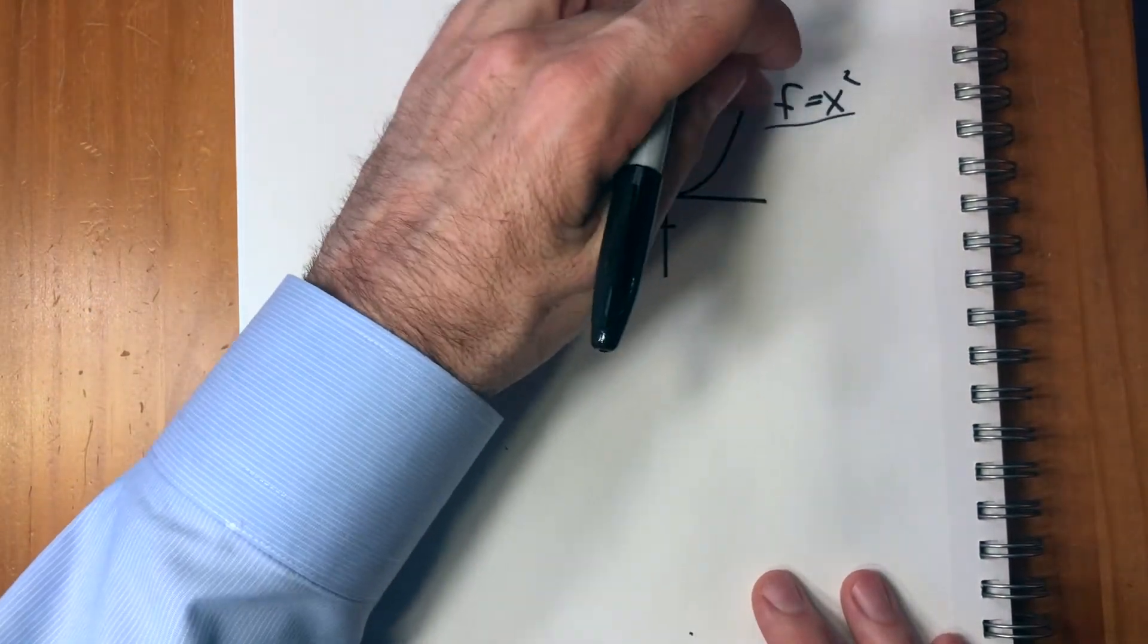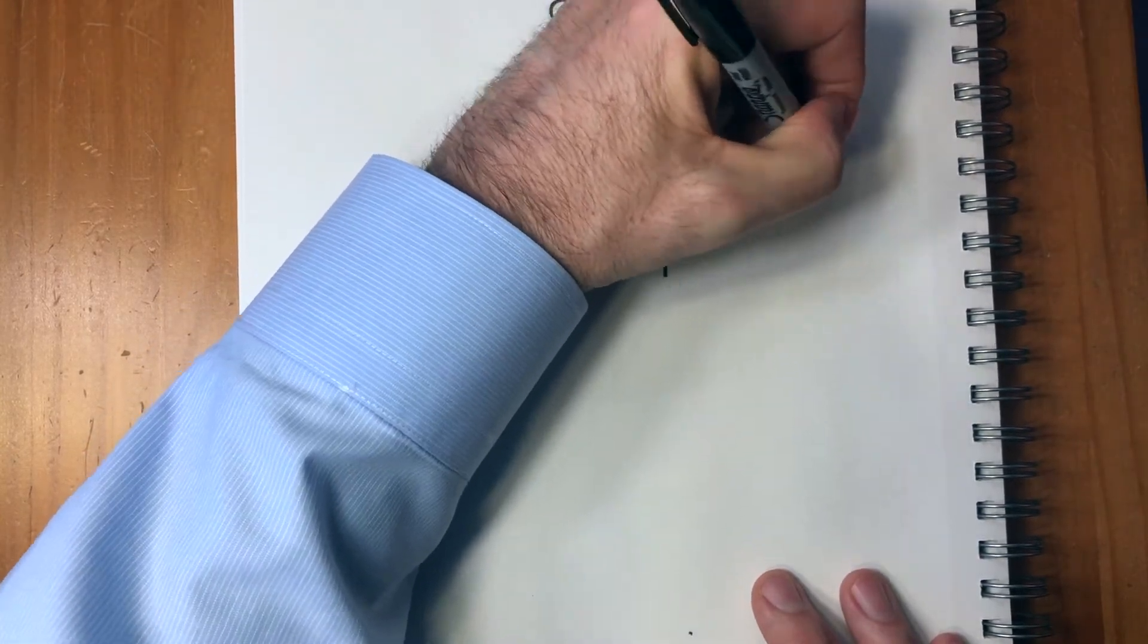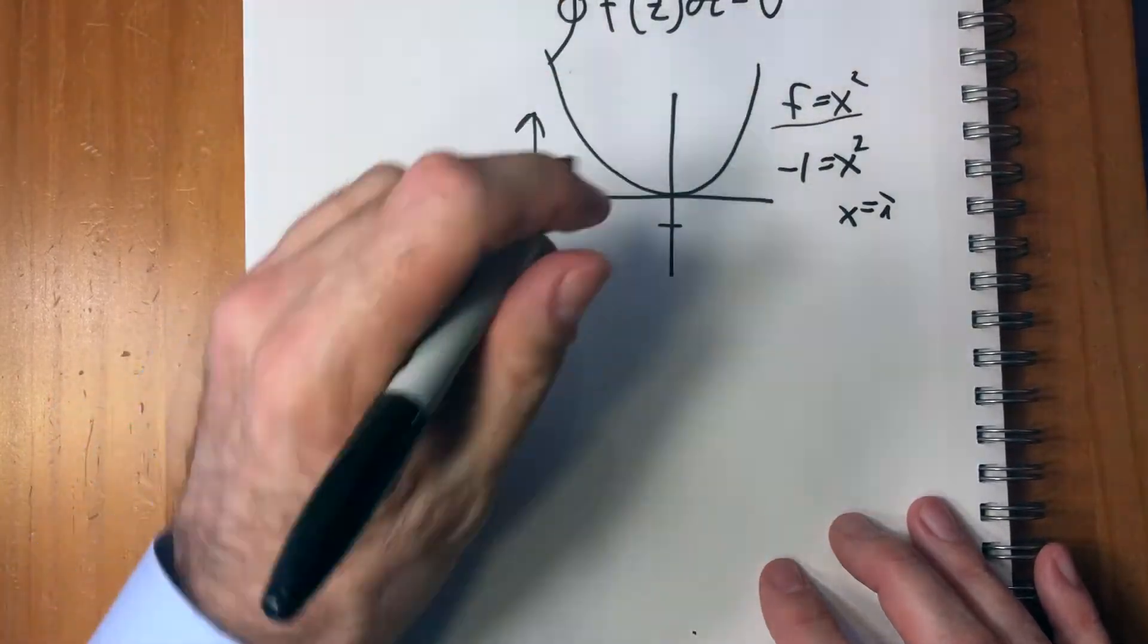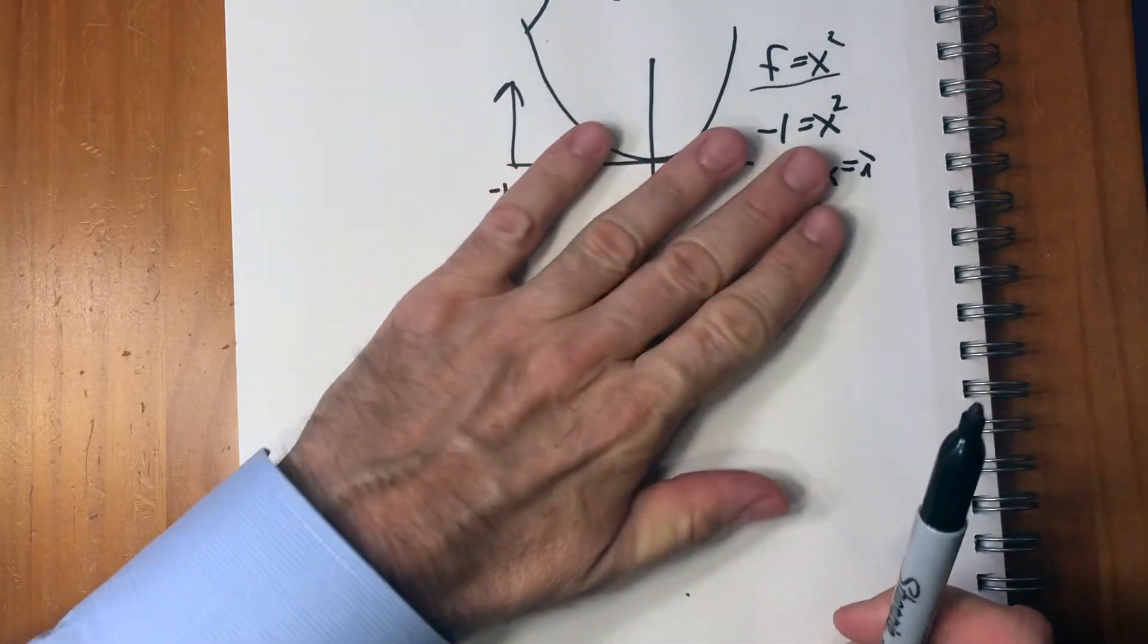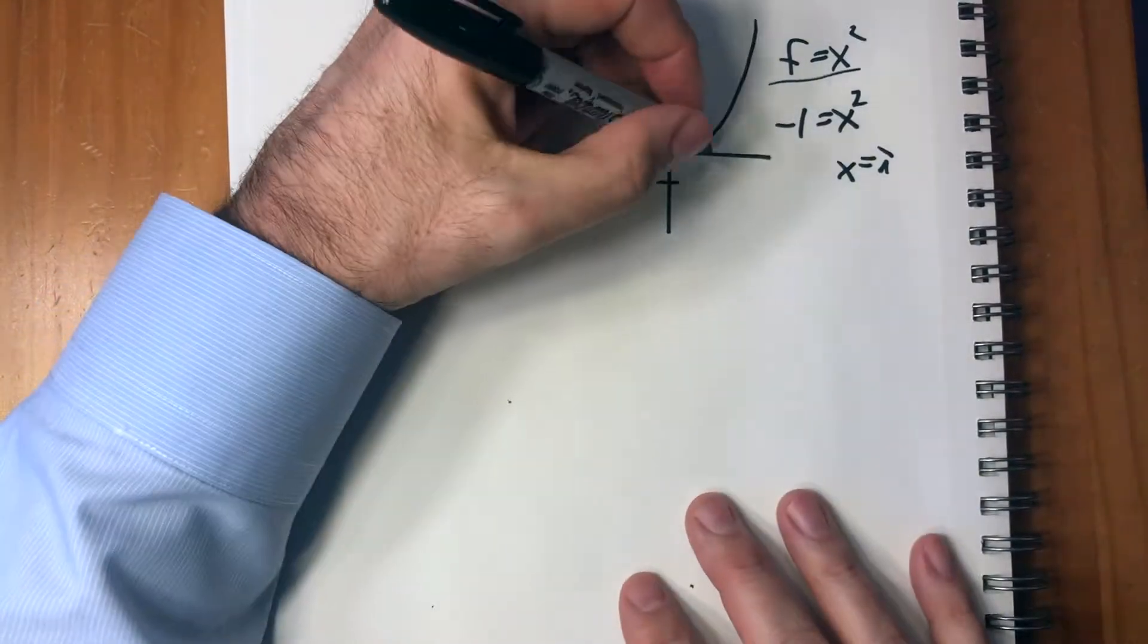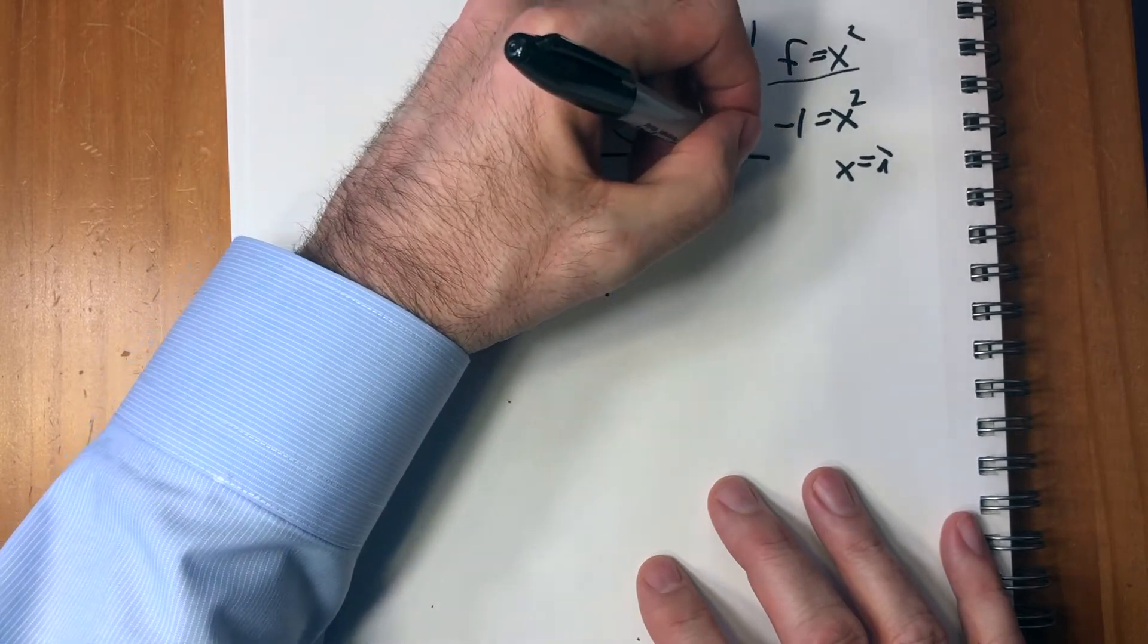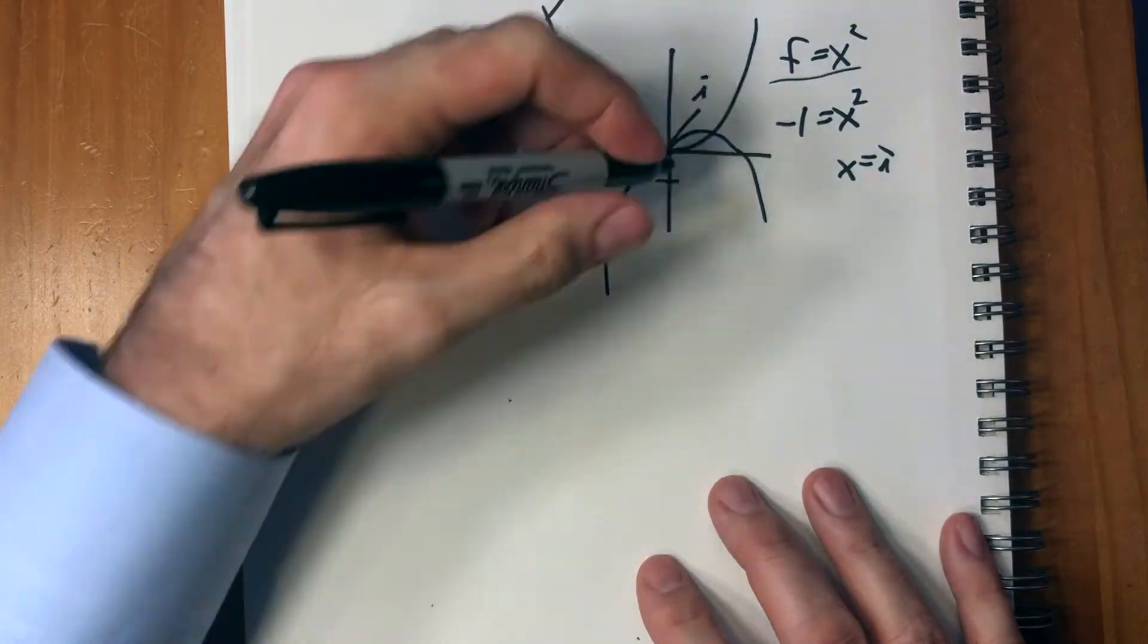Because the range of this only goes from zero up, but what about negative one? There actually is an answer. If you are assuming that F equals negative one, there is an answer there that we were talking about before it's X squared. That means that X would be i.